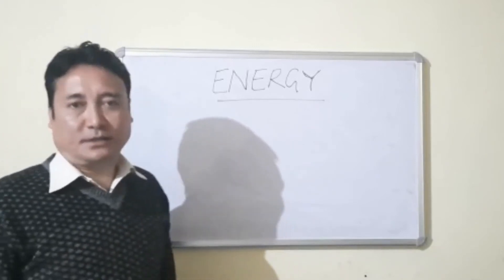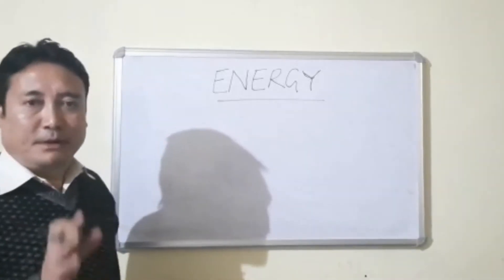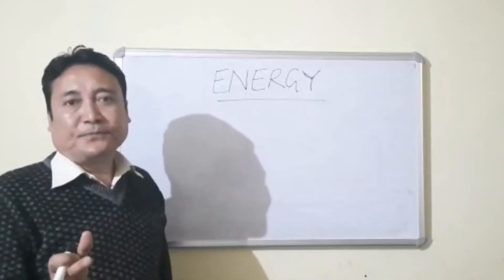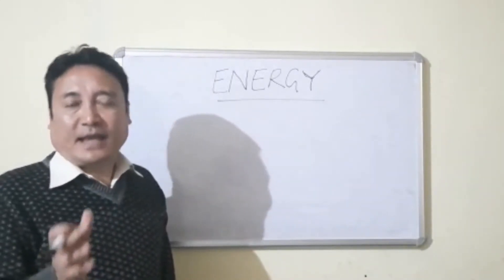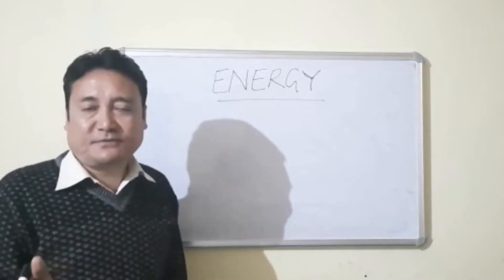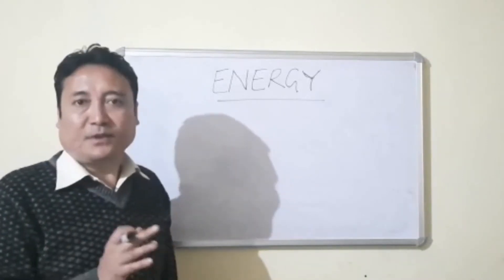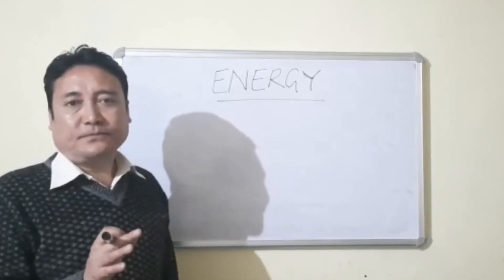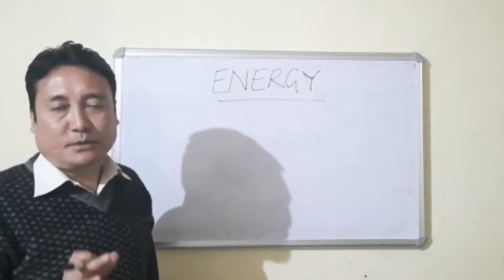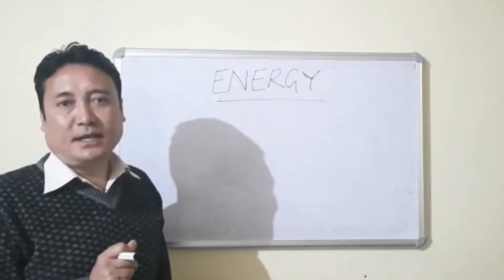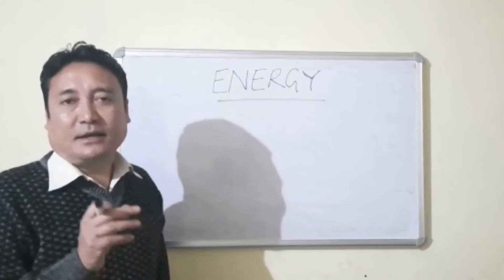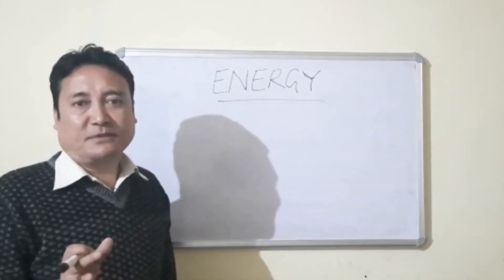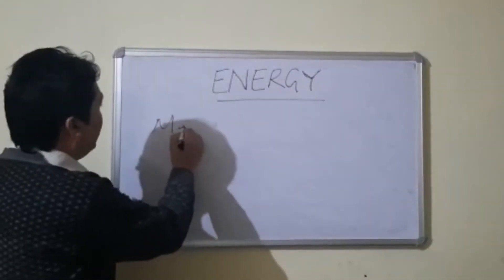So energy is the capacity to do work, and energy can neither be created nor destroyed. Energy can be transferred from one form to another form. There are various forms of energy, but the important forms we will discuss are mechanical energy, chemical energy, and electrical energy.